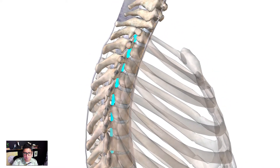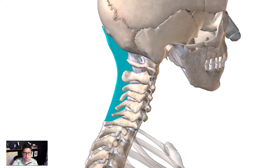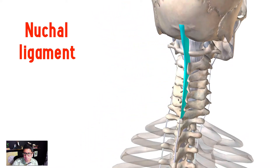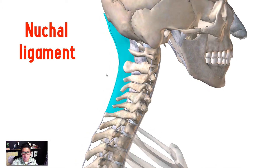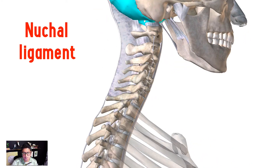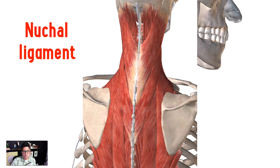Just above that, on the posterior side, is the nuchal ligament. This ligament helps to support the spine and keep the cervical spine intact. It connects with the occipital plate. Because of the inward bend of the cervical spine, it's difficult for muscles to attach directly, so the nuchal ligament plays an important role as an attachment point for muscles like the trapezius on the posterior aspect.